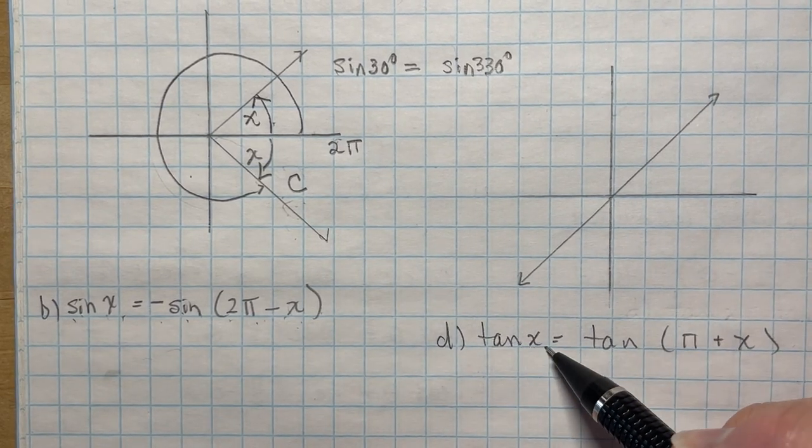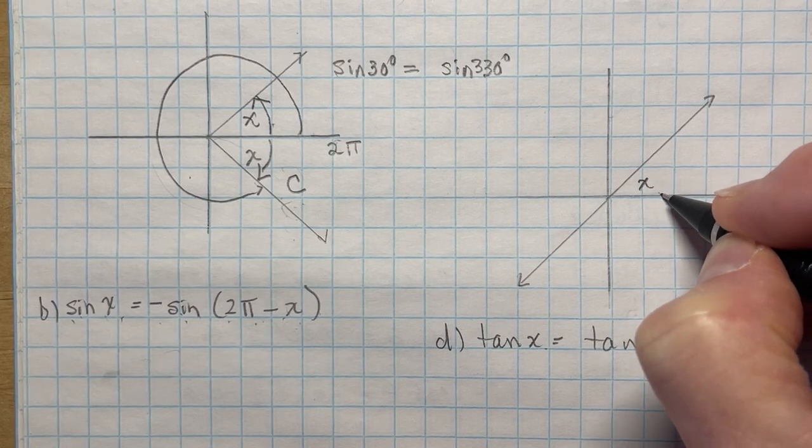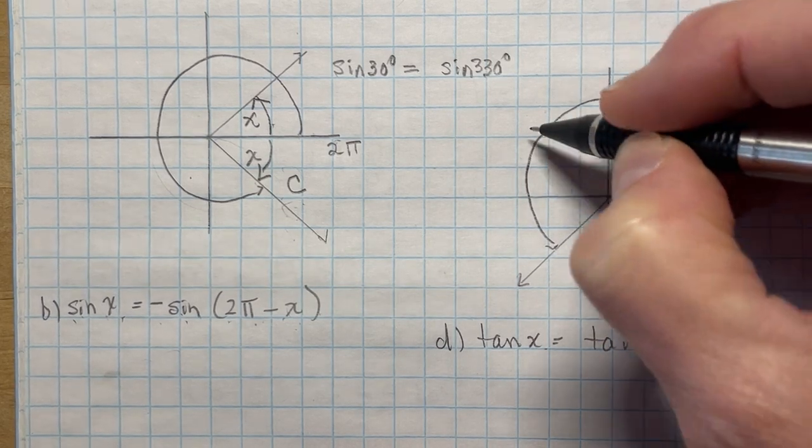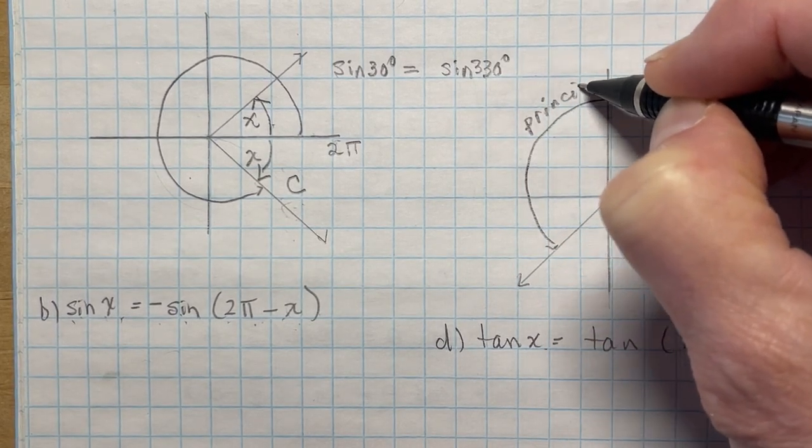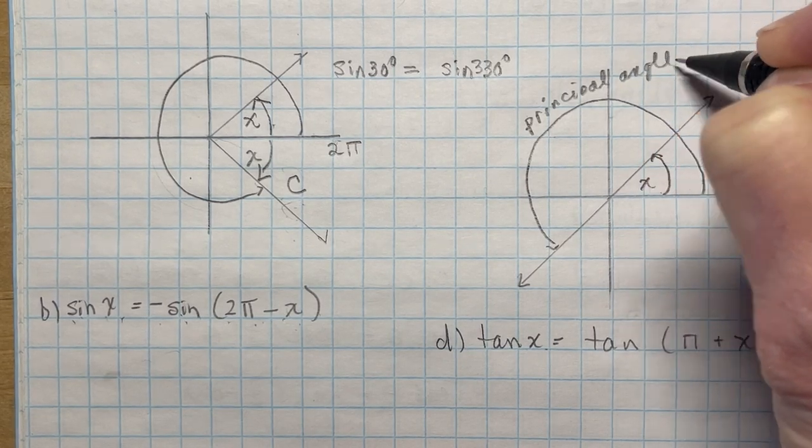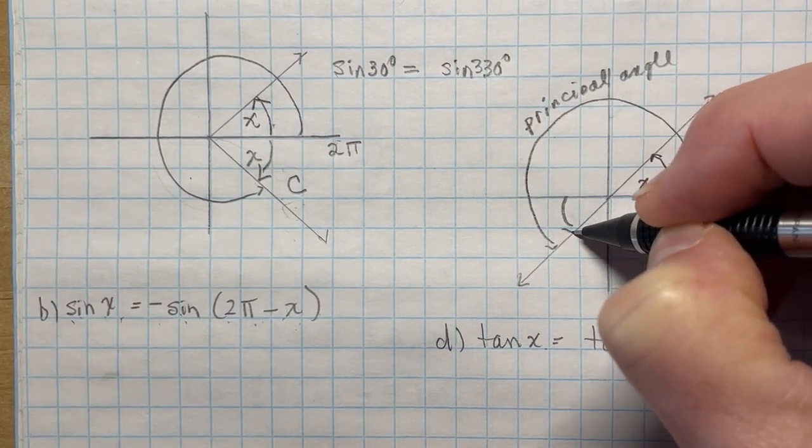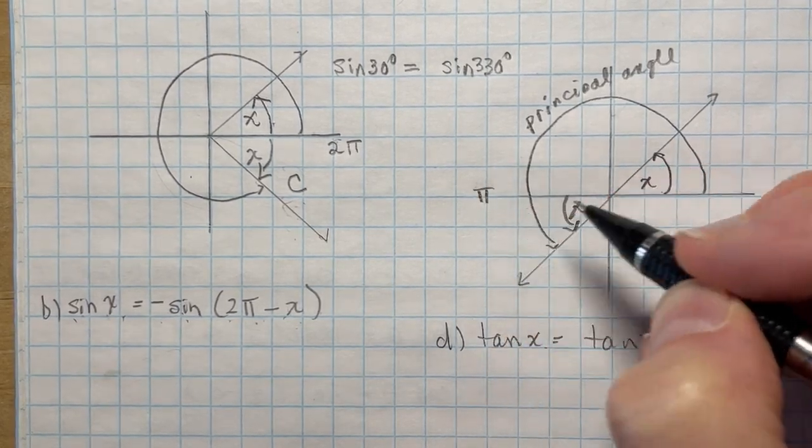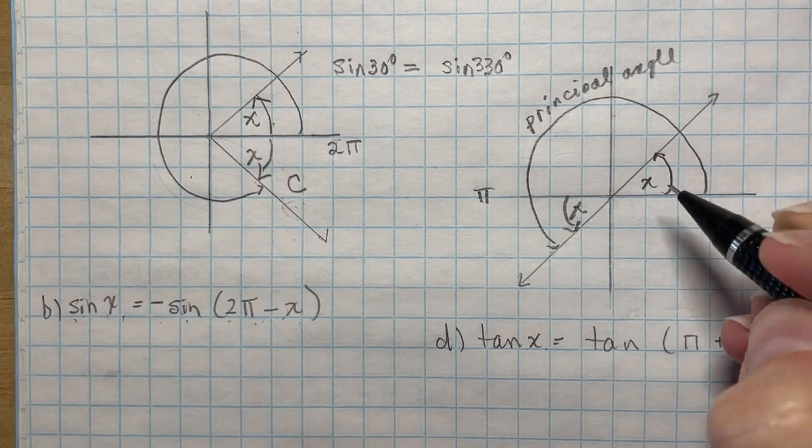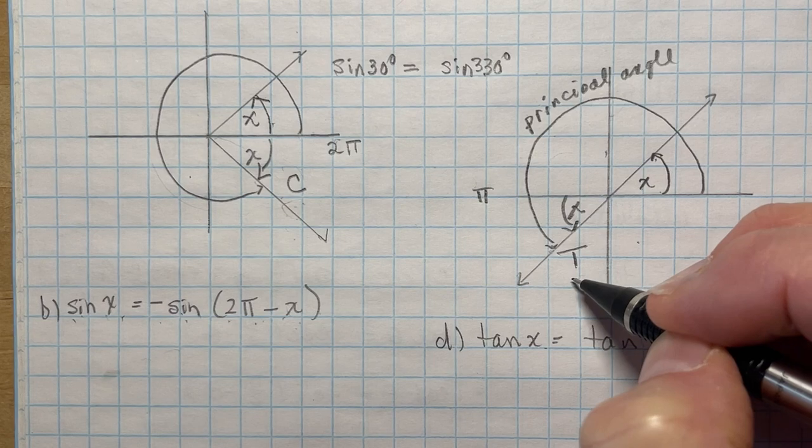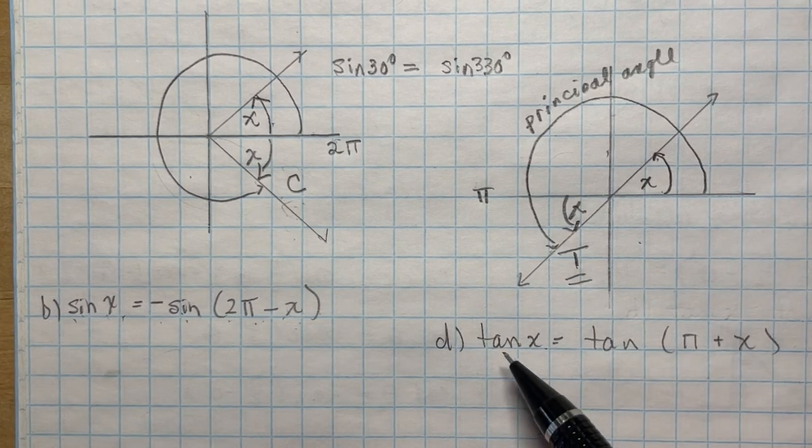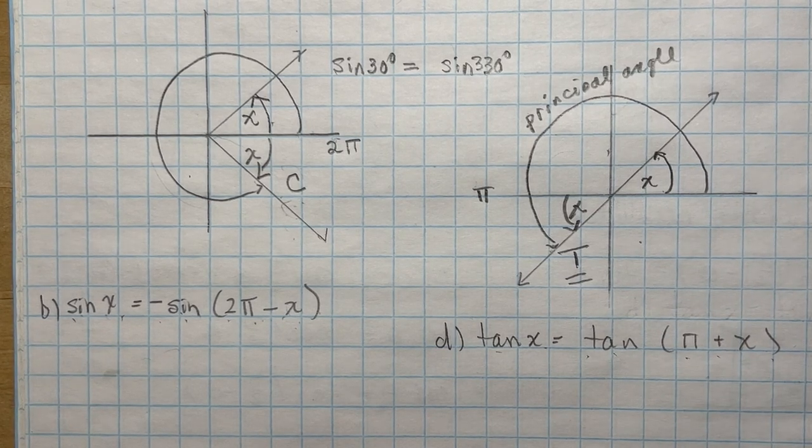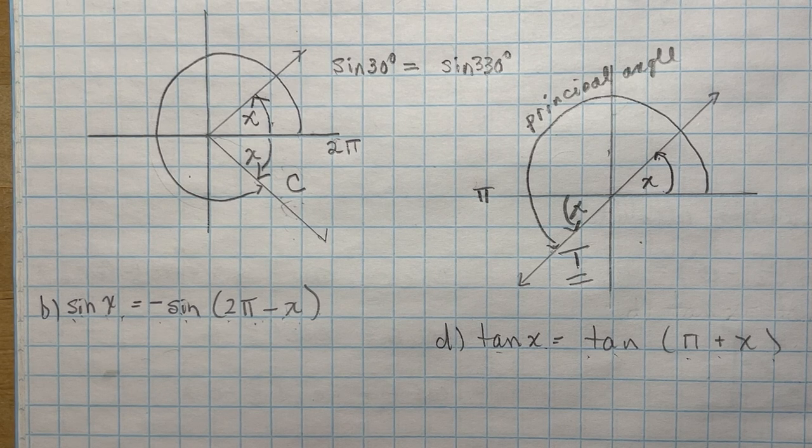And the last one, it says the tangent of X. So here's my X again, my acute angle. My principal angle goes all the way around here. So remember, this is principal angle. And the related acute angle is this one here, which will have the same length of X. So this says π plus X. That brings me down into this quadrant. And CAST, tangent is positive here. So the tangent of X is simply going to be equal to the tangent of π plus X. So that's a complete explanation of page 332, number 17.